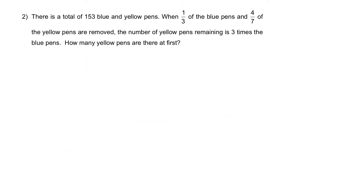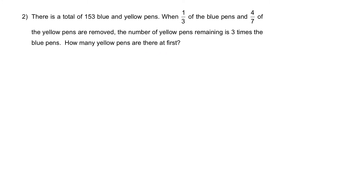Question two: There is a total of 153 blue and yellow pens. When 1/3 of the blue pens and 4/7 of the yellow pens are removed, the number of yellow pens remaining is three times the number of blue pens. How many yellow pens were there at first?